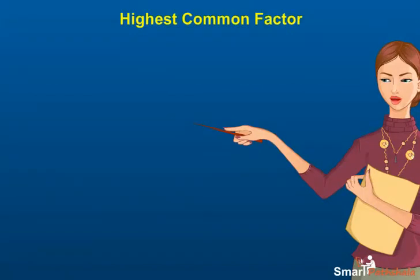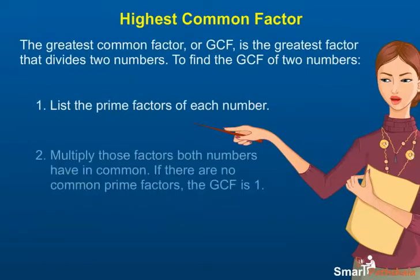Highest Common Factor. The greatest common factor or GCF is the greatest factor that divides two numbers. To find the GCF of two numbers: